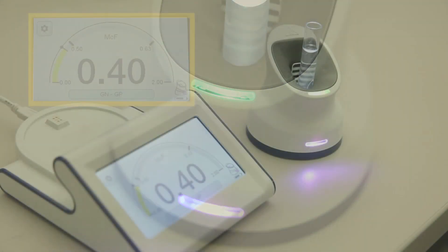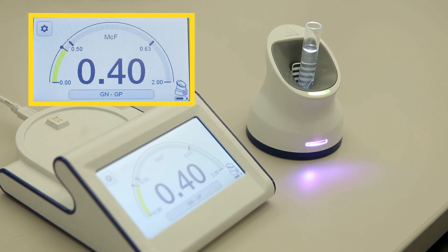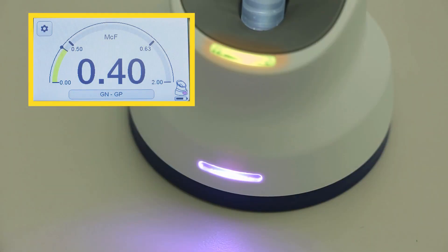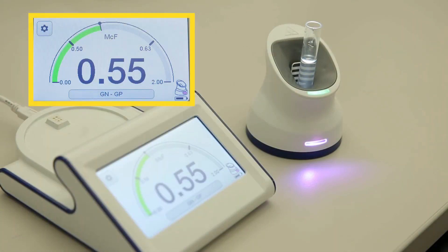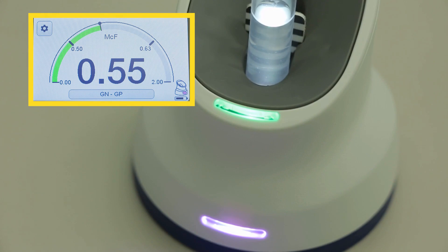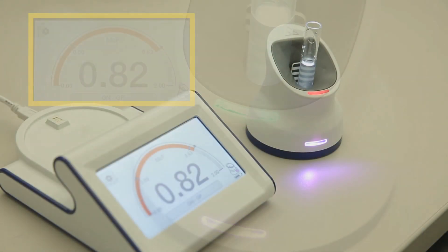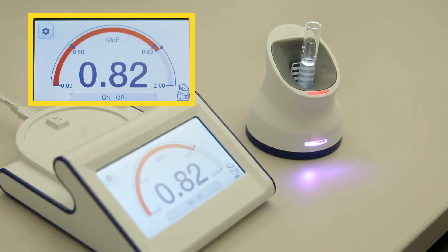A yellow light shows that the suspension is below the selected card type McFarlane range. A green light indicates that the suspension is within the selected card type McFarlane range. A red light means the suspension is above the selected card type McFarlane range.